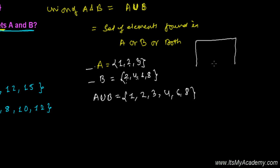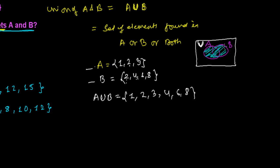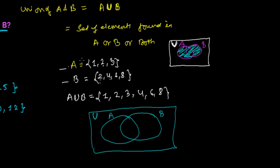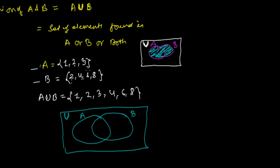In a Venn diagram, if we have a universal set, set A and set B overlapping, then A ∪ B represents all parts of both circles — that is, everything in the region of A and everything in the region of B. If set A and set B have no elements in common — meaning none of the elements of A appear in B — then we have what's called a disjoint set, and we draw A and B as separate, non-overlapping circles.